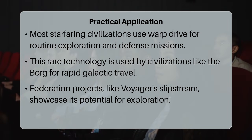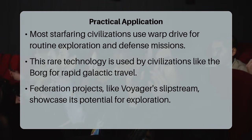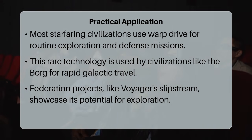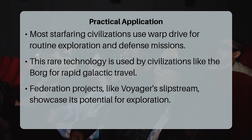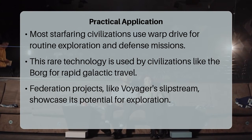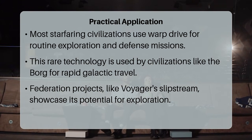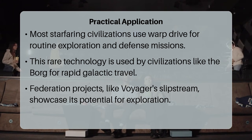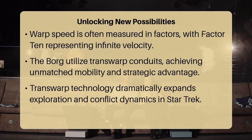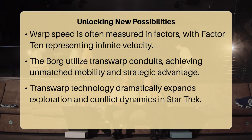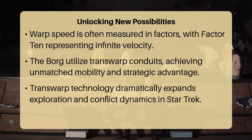An interesting detail is how warp speed is often measured in factors, with warp factor 10 representing infinite speed in early Star Trek lore. However, transwarp vehicles can effectively exceed or bypass this scale entirely. The Borg, for example, do not typically refer to warp factors when discussing their travel. Instead, they measure in terms of spatial displacement and transit time, highlighting a fundamentally different approach to faster-than-light travel.